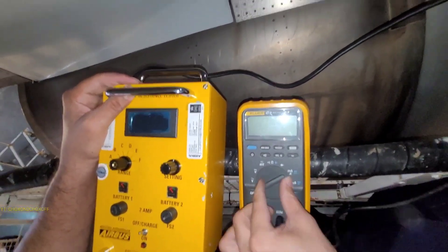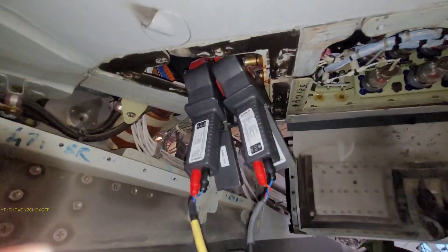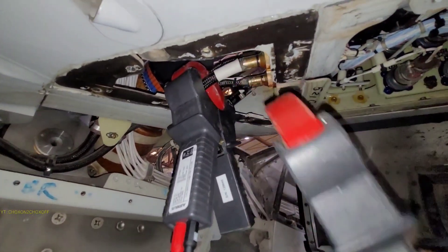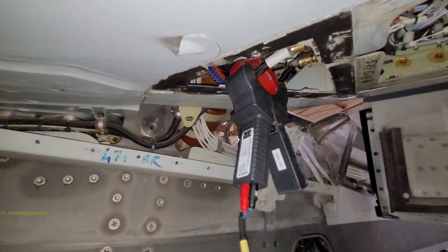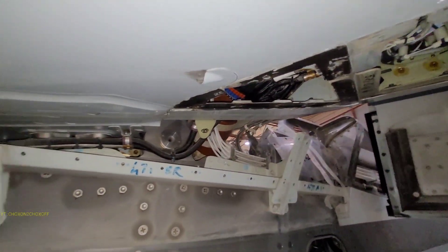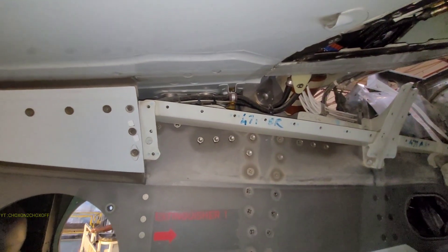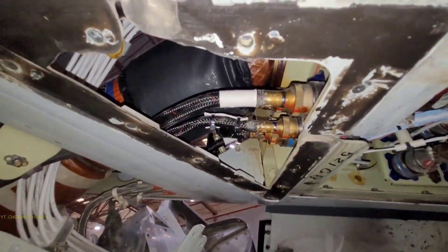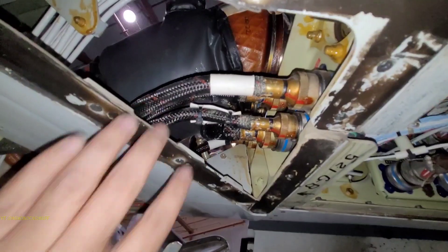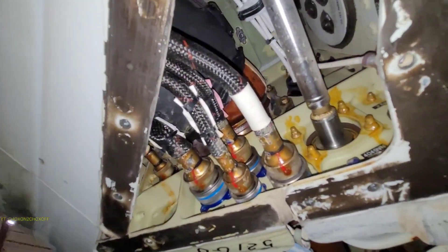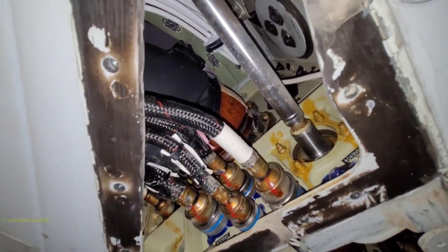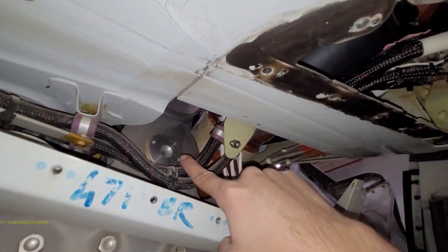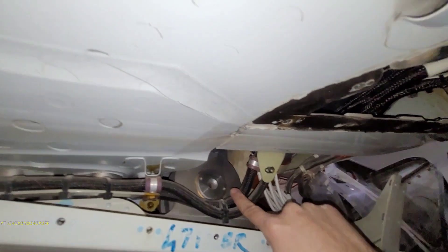We will just take it to minimum and then we will switch off. We'll switch off this also, and then we will remove the loop. Same thing we have to do for each plug which is mentioned in our AMM procedure. It is not necessary to do it near the connector, we can do a little bit far away also where the cable is accessible.